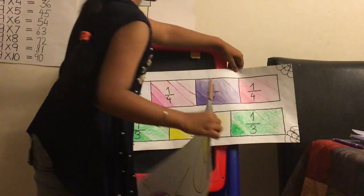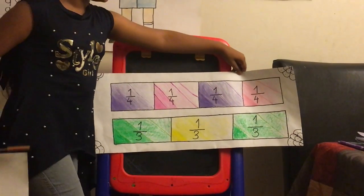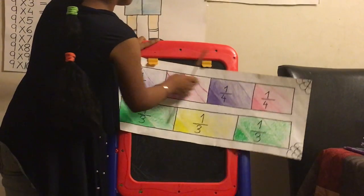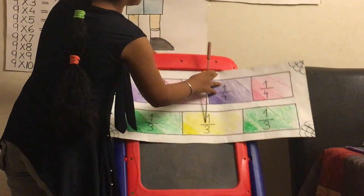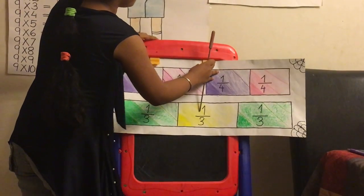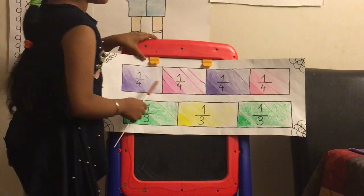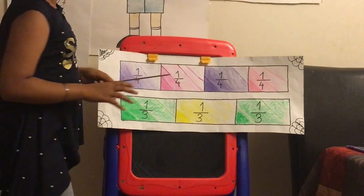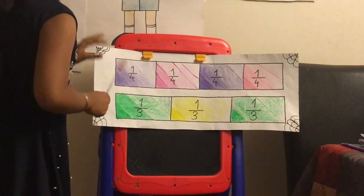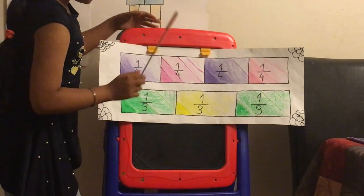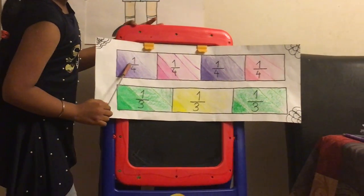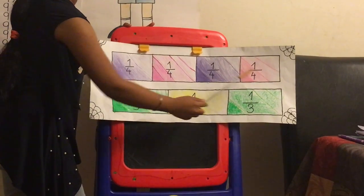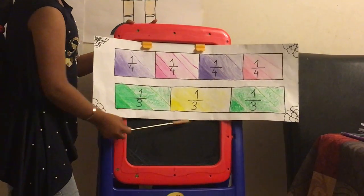For our last strategy: fraction strips. When the denominator is different but the numerator is the same, this is the one that's going to help you out. You can see that one-fourth is cut into smaller pieces than one-third.